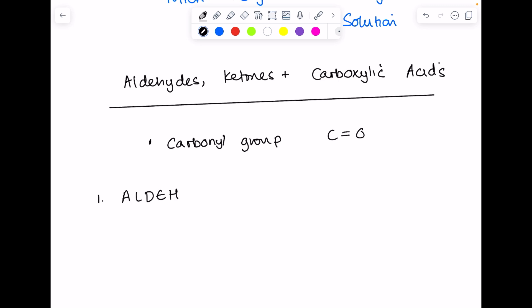So aldehydes, they contain the functional group CHO, which remember looks like this. Always bear in mind that carbon forms four bonds, oxygen forms two, hydrogen forms one.